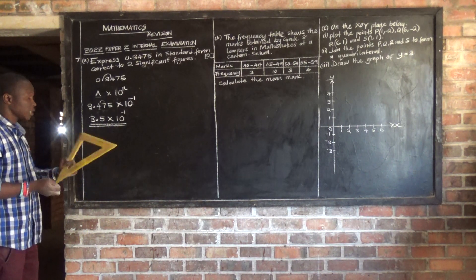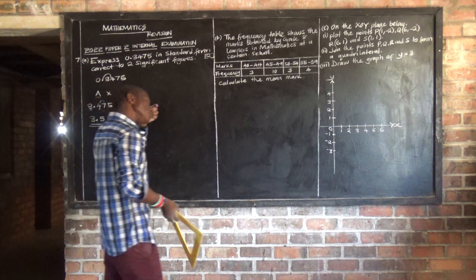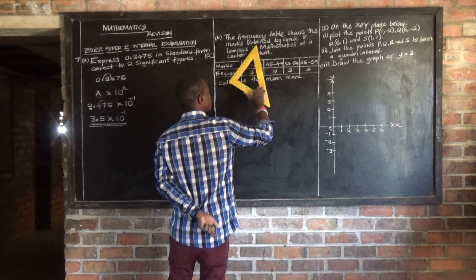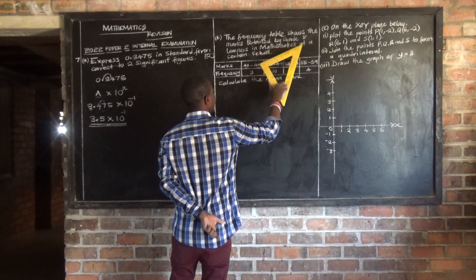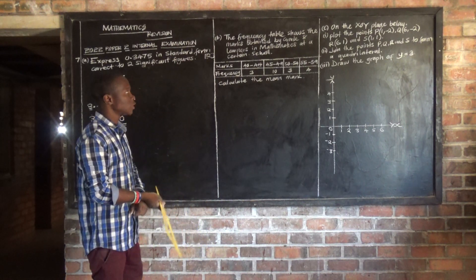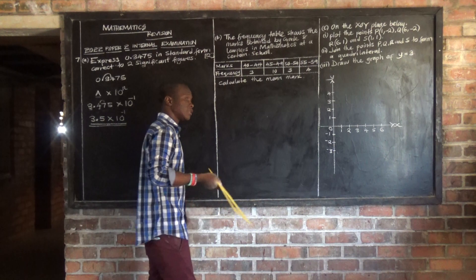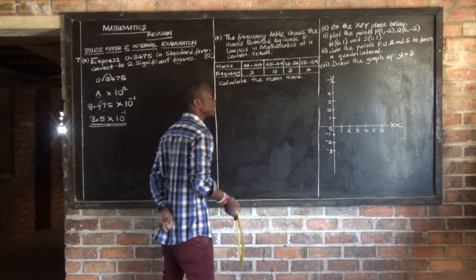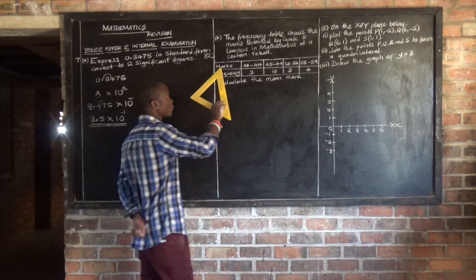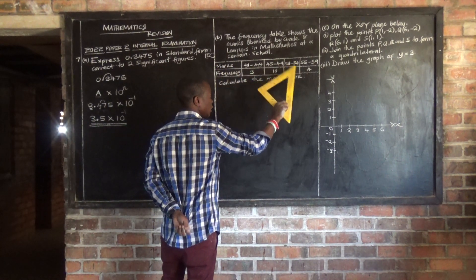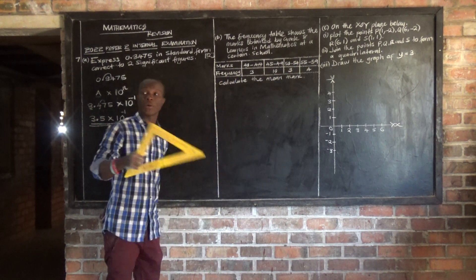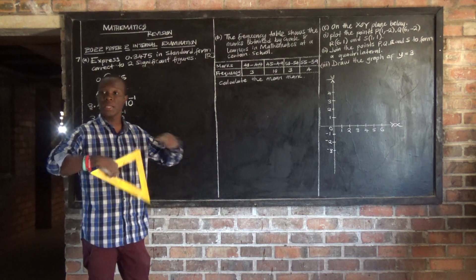Now let us look at the question on statistics. It says the frequency table shows the marks obtained by grade 8 learners in mathematics at a certain school. This table has got two rows. The first row is showing the marks they obtained in terms of the range. Then the second row is showing the frequency, meaning the number of learners.